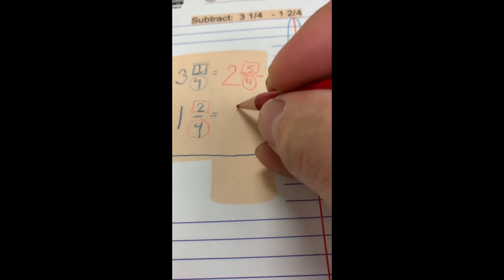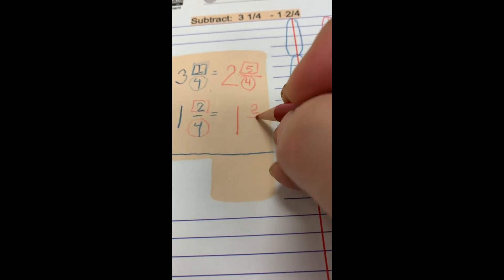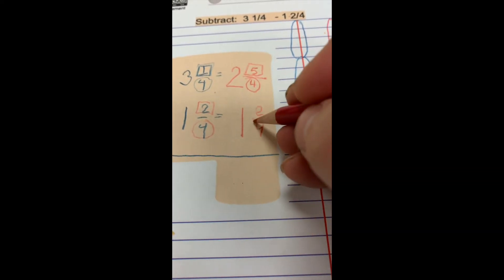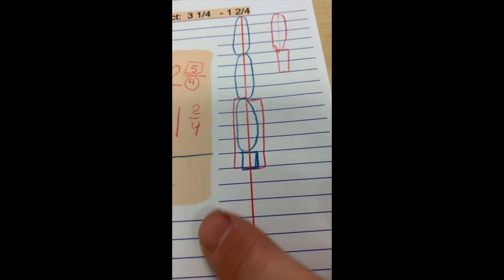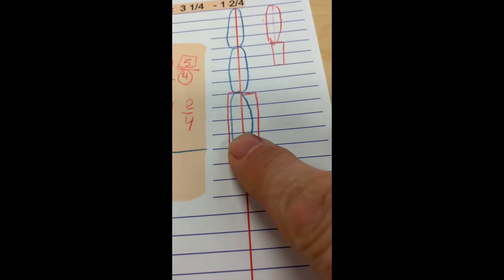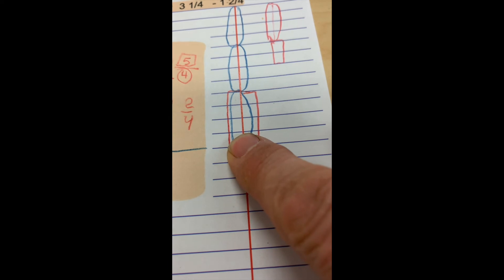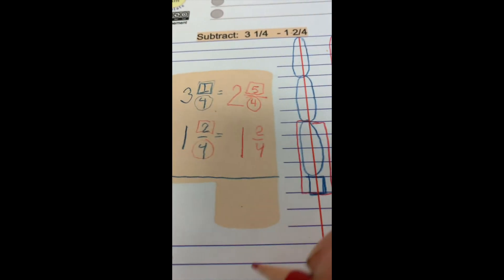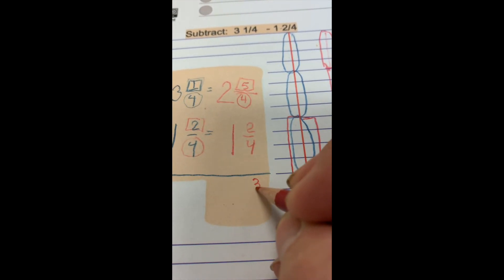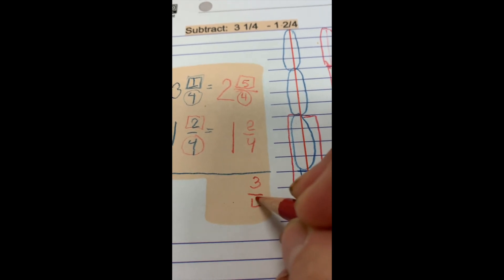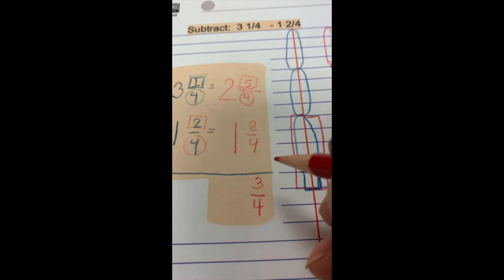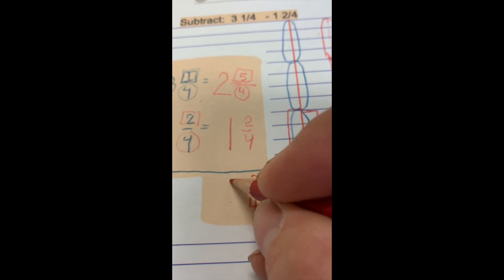And then down here, this stays the same. Now I can subtract 5 minus 2. If you think that, take away 2 of those, and I've got 3 left. 3 what? 3/4, so 3/4 inches. And 2 inches minus 1 inch is 1.